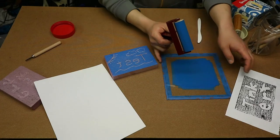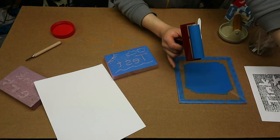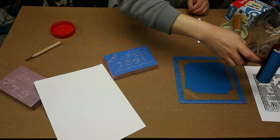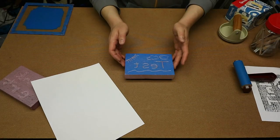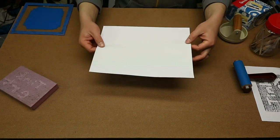So, we have a nice even coat of paint on our block. And our block is ready to print. So, we will just simply apply our paper to it.